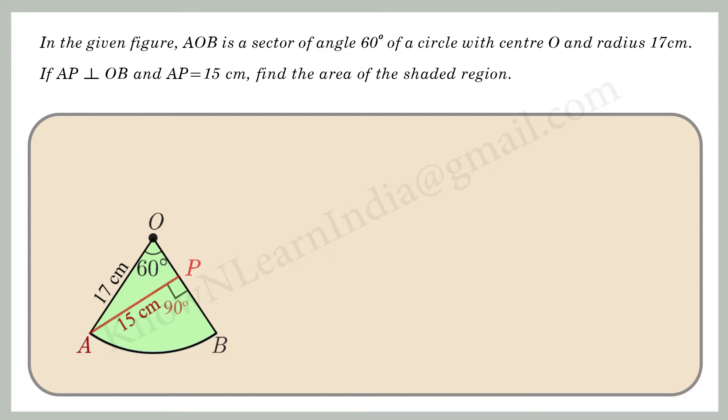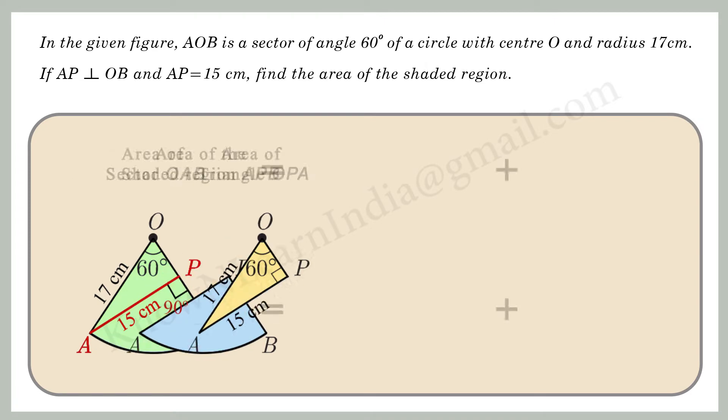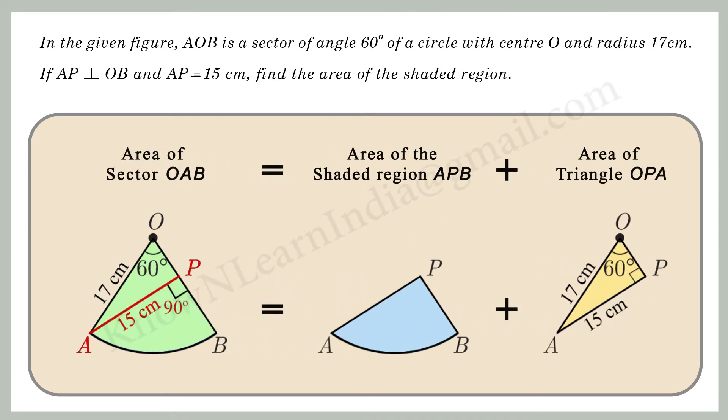A line AP perpendicular to OB divides the sector AOB into two parts, one a triangle OPA and the shaded region APB. As AP is perpendicular to OB, triangle OPA is a right triangle formed within the sector AOB.